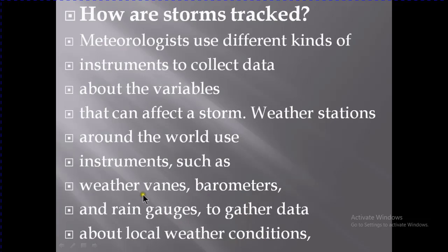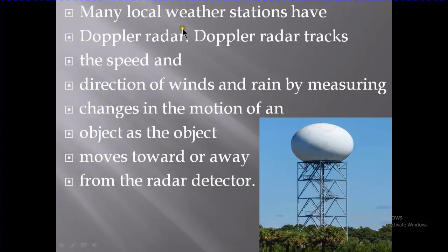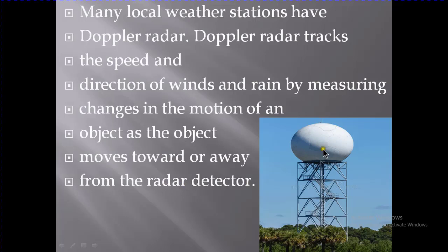Many local weather stations have Doppler radar. This radar has a lot of detectors that track the speed and direction of wind and rain by measuring changes in the motion of an object as it moves towards or away from the radar detector. This allows it to collect data, which meteorologists then gather and use to inform us about weather conditions.